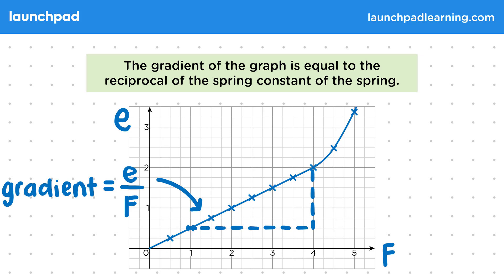Before the limit of proportionality, f is equal to ke, where k is the spring constant or stiffness. So k is simply equal to f over e. All we need to do is flip the gradient to get the equation for k, and this is what we mean by the reciprocal.